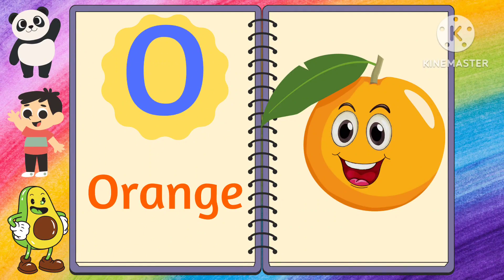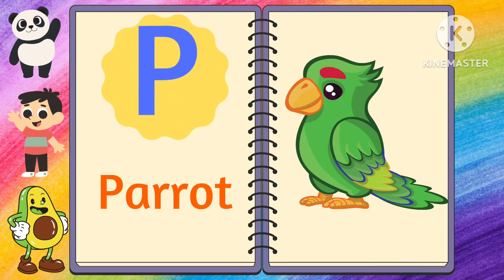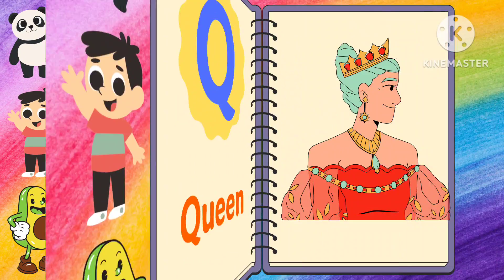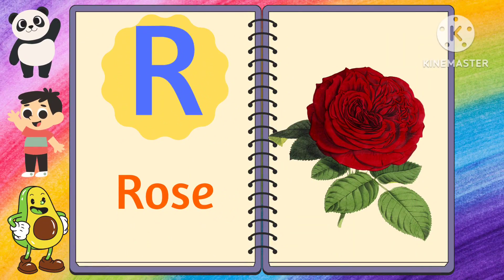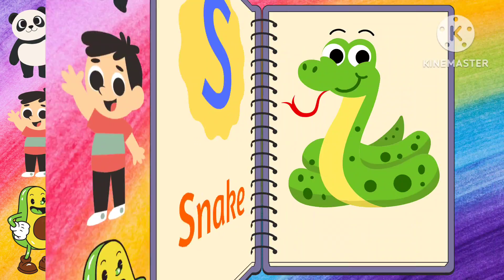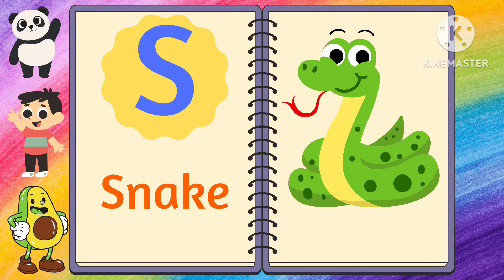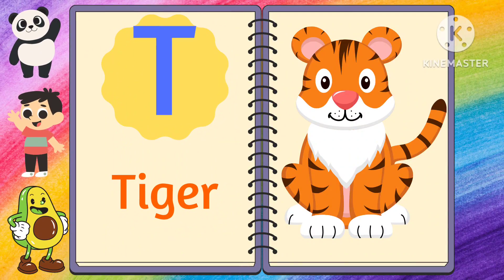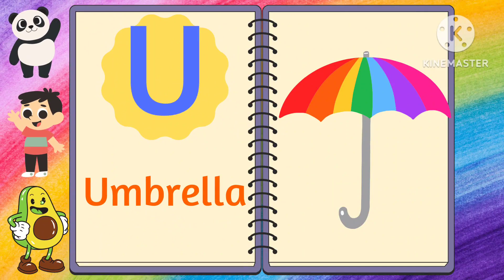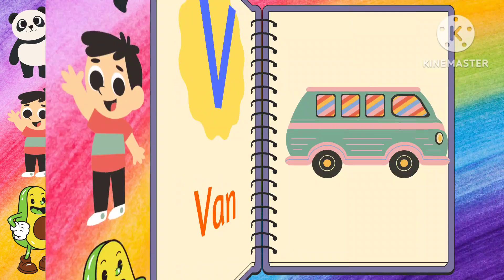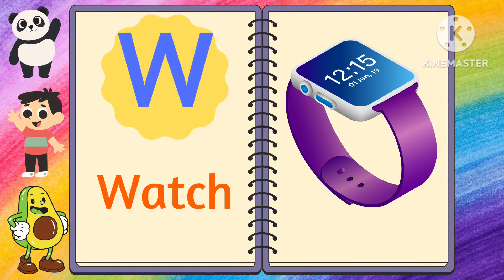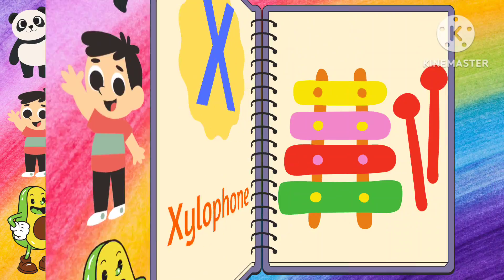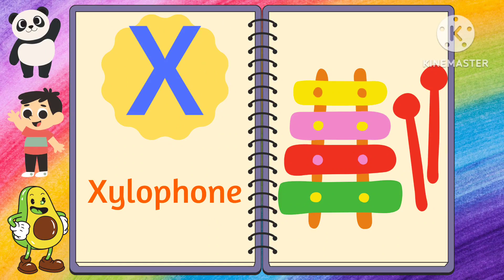O for orange. P for parrot. Q for queen. R for rose. S for snake. T for tiger. U for umbrella. V for van. W for watch. X for xylophone.